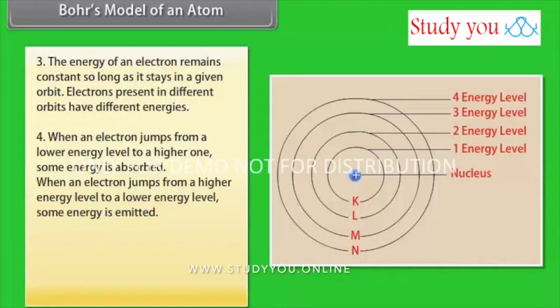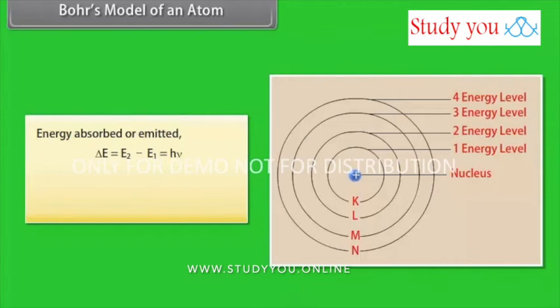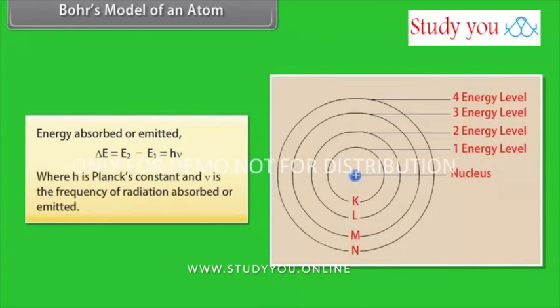The amount of energy absorbed or emitted is given by the difference of energies associated with the two levels. Energy absorbed or emitted, delta E equals E2 minus E1, which equals h nu, where h is Planck's constant and nu is the frequency of radiation absorbed or emitted.